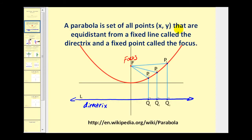A parabola is the set of all points (x, y) that are equidistant from a fixed line called the directrix, and a fixed point called the focus. So this blue line would be our directrix, and this red point would be the focus. The parabola consists of all the points that are the same distance from the point as they are to this horizontal line. The length of each segment to the focus equals the length of the corresponding segment to the directrix, and this would be true for any point on the parabola.